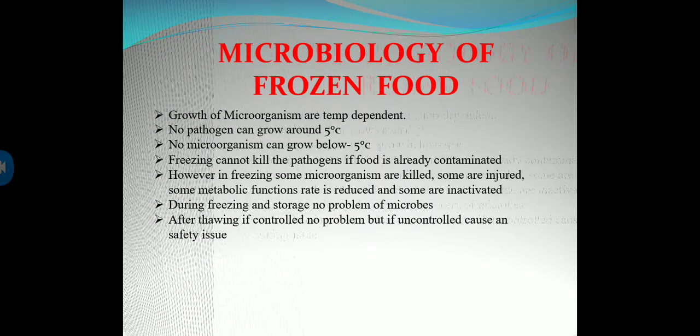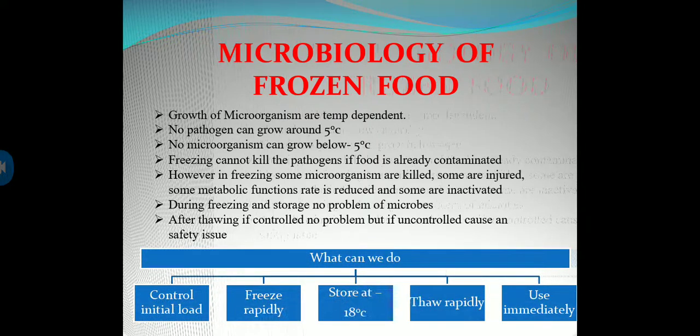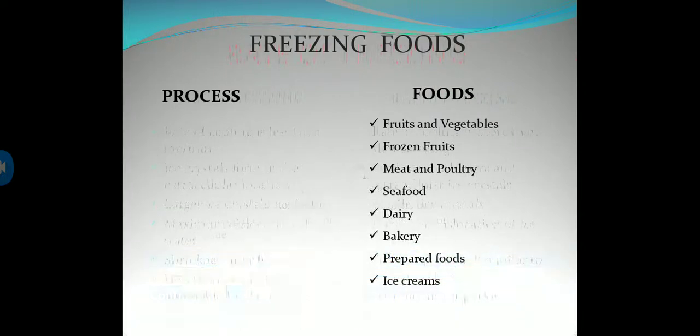Regarding the microbiology of frozen foods: growth of microorganisms is temperature dependent. No pathogen can grow around 5°C, and no microorganisms can grow below minus 5°C. Freezing cannot kill pathogens if food is already contaminated. During freezing and storage, no problems with microbes occur. After thawing, if controlled, no problem; but if uncontrolled, it causes a food safety issue. To control this: freeze rapidly, store at minus 18°C, thaw rapidly, and use immediately.